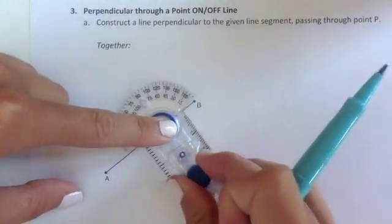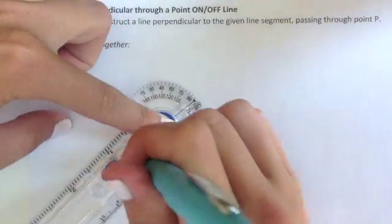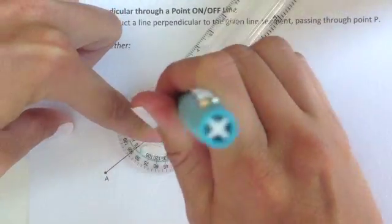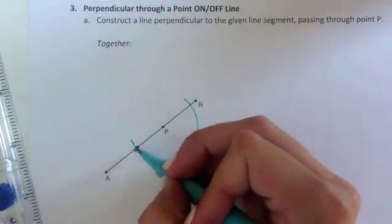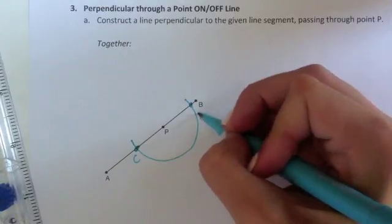I'm going to close my radius up, and then I'm going to swing what I like to call a smiley arc because it looks like a smiley face. I have my smiley arc and I'm going to label the two intersection points as C and D.